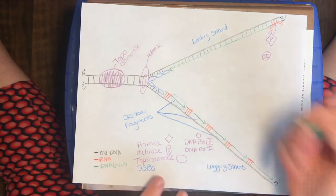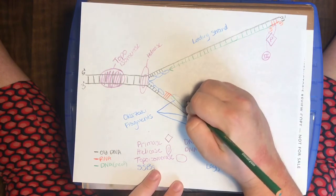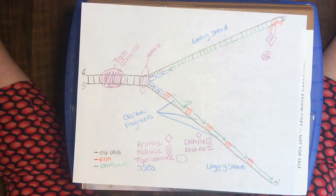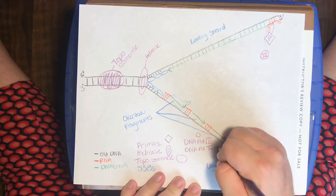Well, good news, each one of these fragments at the end of it has a 3' hydroxyl group. So, we have something for DNA polymerase to extend from. So, DNA polymerase 1, which is also going to be a circle, but it's going to have a 1 inside of it.